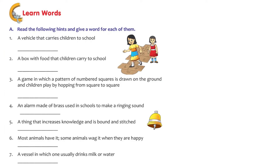Now I'm going to read a few sentences from the book and you have to tell me which word is suitable. Let's look at the activity on page 29. A vehicle that carries children to school - it's a school bus. A box with food that children carry to school - we usually call it a lunch box. A game in which a pattern of numbered squares is drawn on the floor and children play by hopping from square to square - hopscotch!